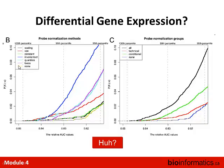Interestingly, the purple curve representing loess normalization — absolutely standard for two-color arrays but rarely used for one-color — quantile normalization, which is what RMA uses, and VSN, used for one-color arrays, all appear. There's a lot of evidence that methods invented for microarrays but not broadly applied to Affymetrix arrays could be of use.